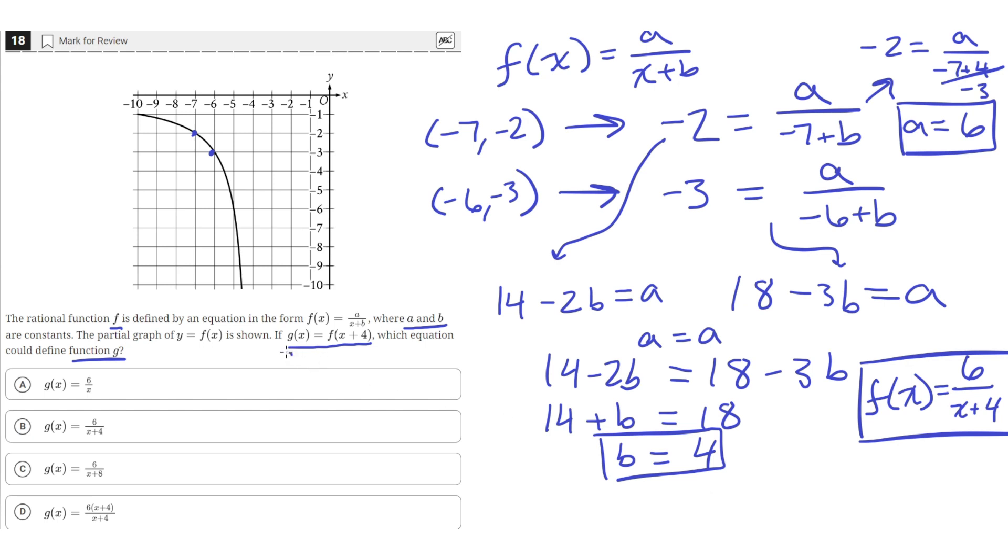But the question asked us for g(x). We know that g(x) equals f(x plus 4). So what we really need to do is replace x with x plus 4. When we do that, we get that g(x) equals 6 over x, but this time x is going to be x plus 4 instead. We're going to have x plus 4 plus 4, which is just equal to 6 over x plus 8. So the equation for g(x) is 6 over x plus 8, which is answer choice C.